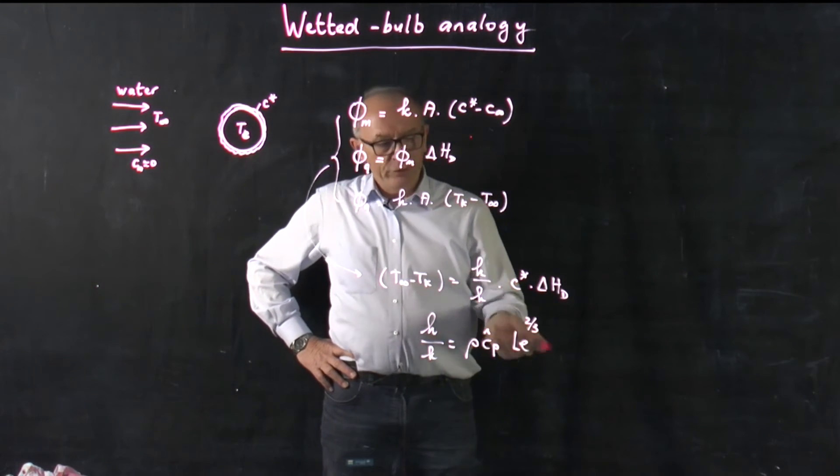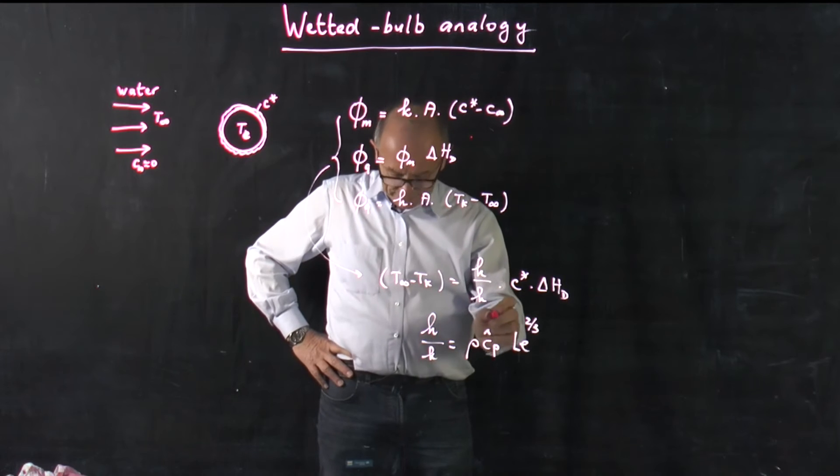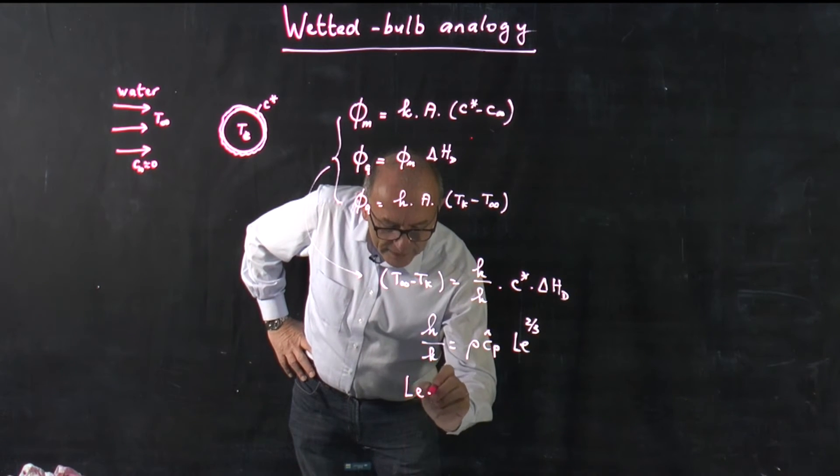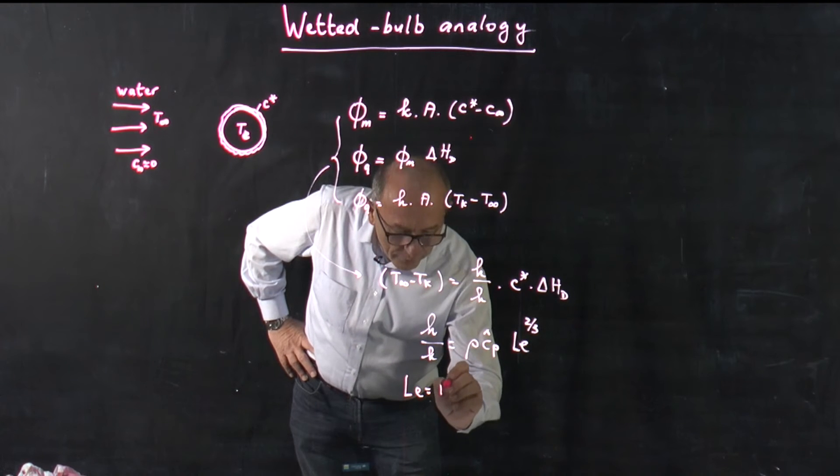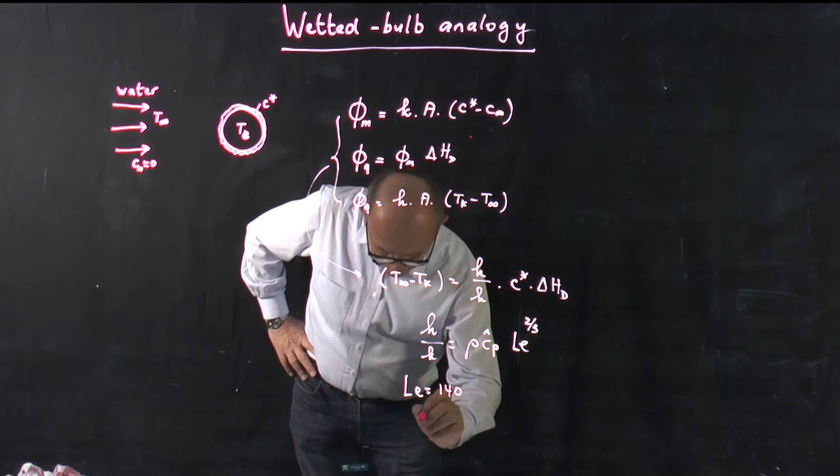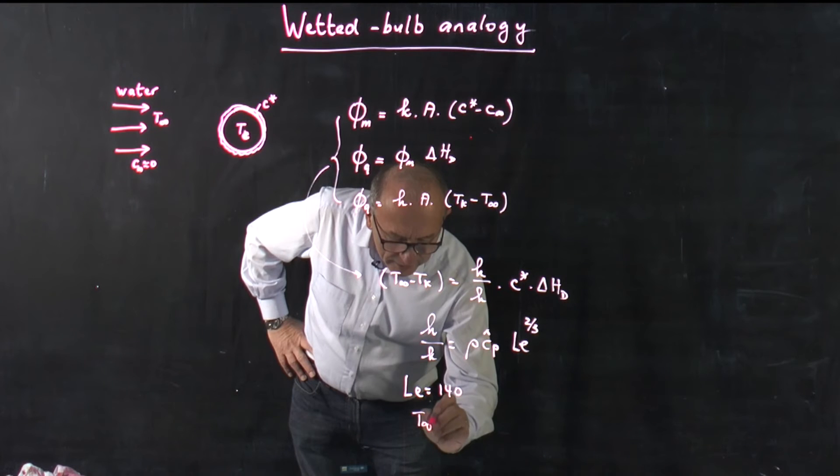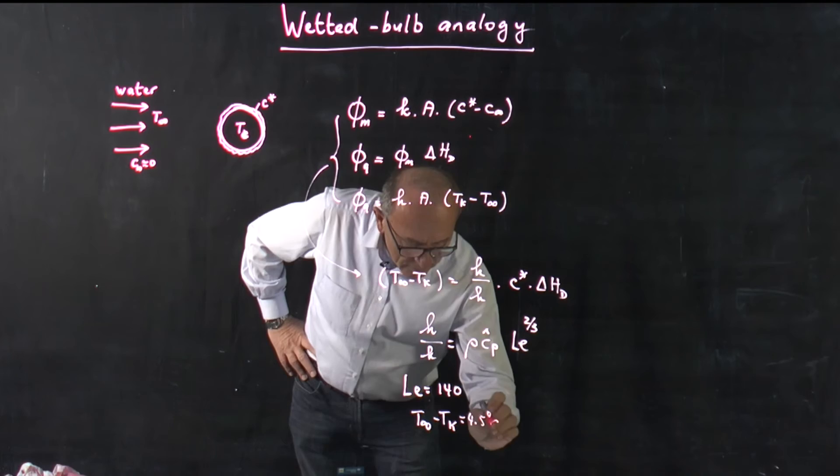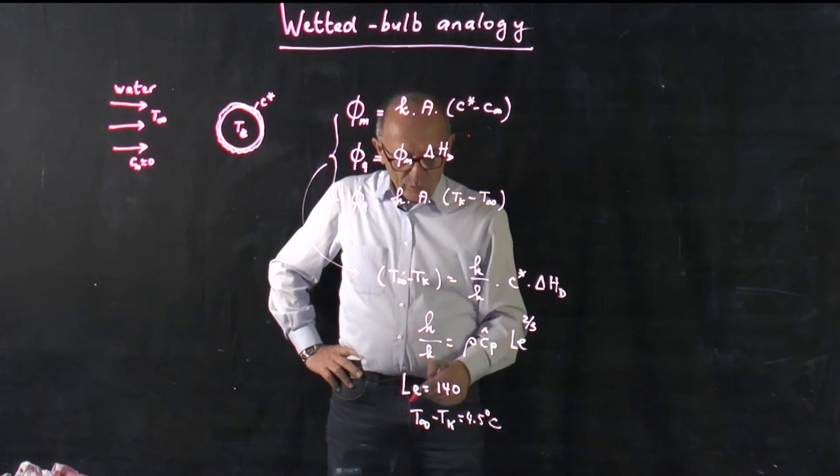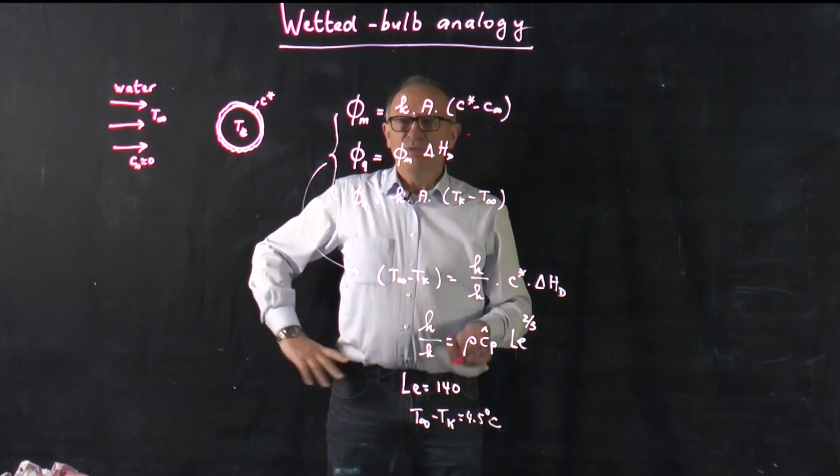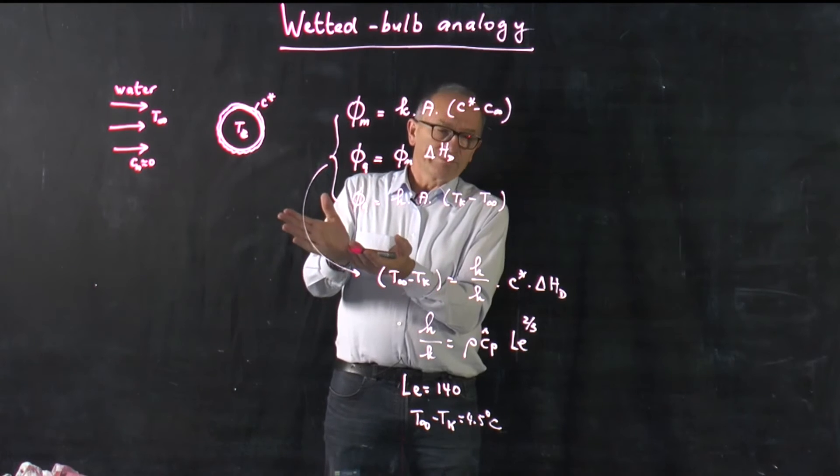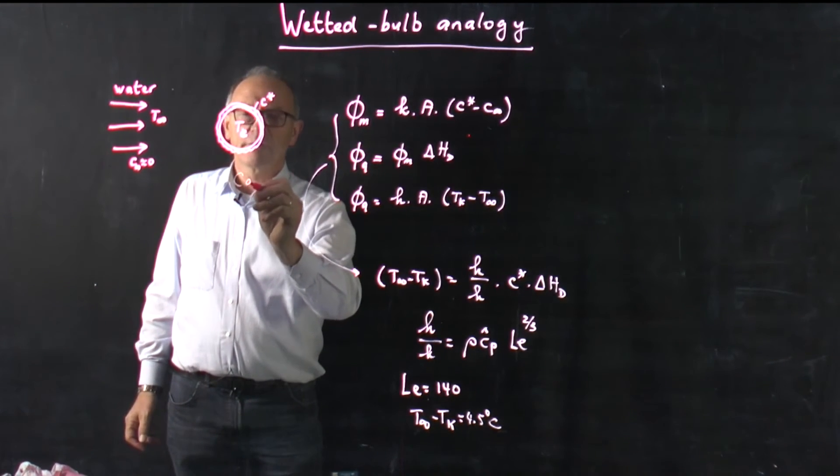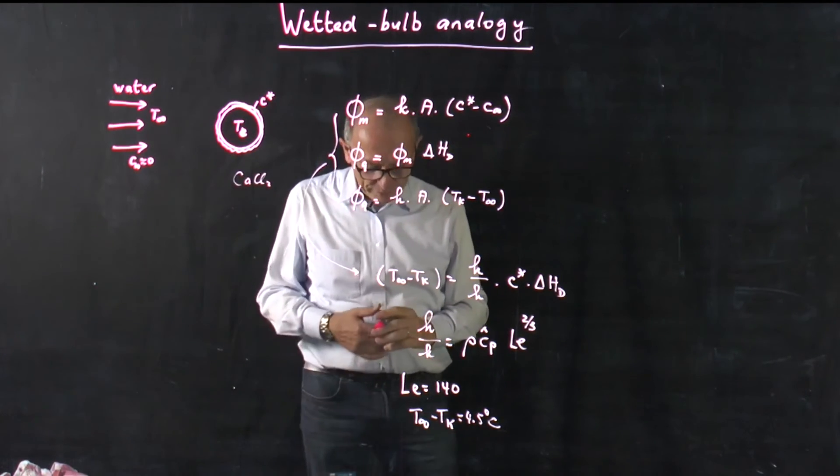And if you would substitute the right values of all these things in it, you would derive that the Lewis number in this case will be 140, and T infinity minus T crystal will be 4.5 degrees C. However, the big question you would pose to me is which crystal are you dissolving? Well, in this case I have taken calcium chloride to dissolve in water.